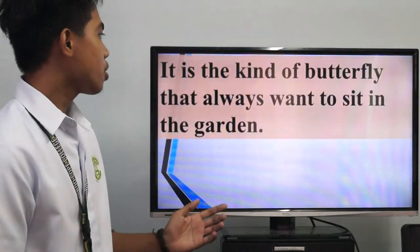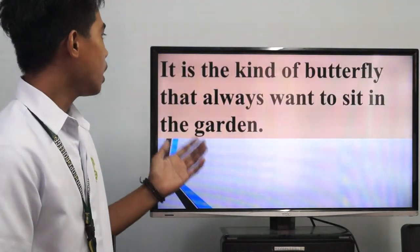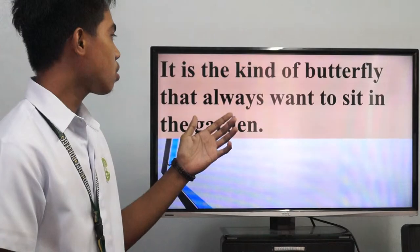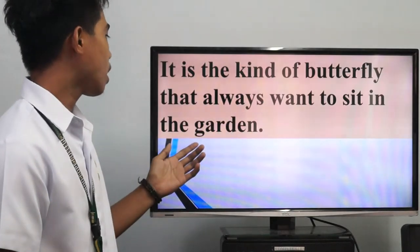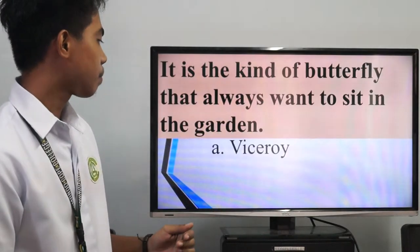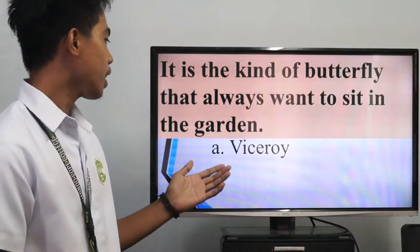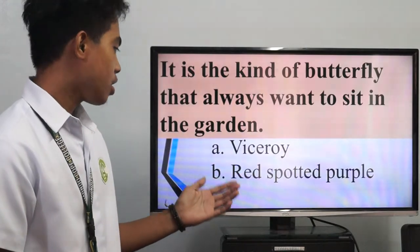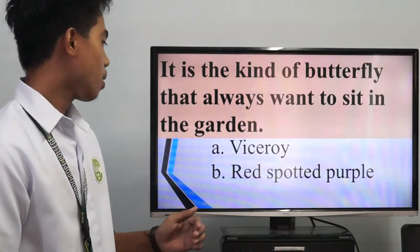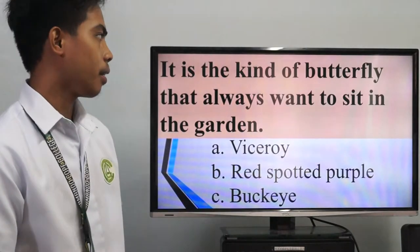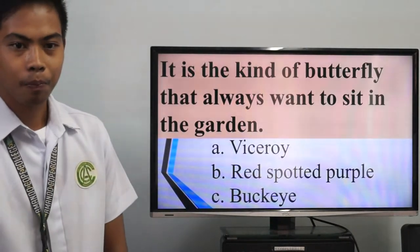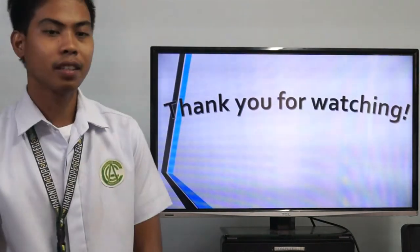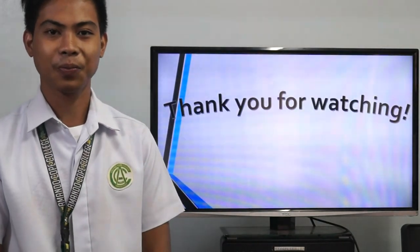The last question: it is the kind of butterfly that also likes to sit in the garden. A, a Viceroy. B, a Red Spotted Purple. Or C, a Buckeye. That's all. Thank you.